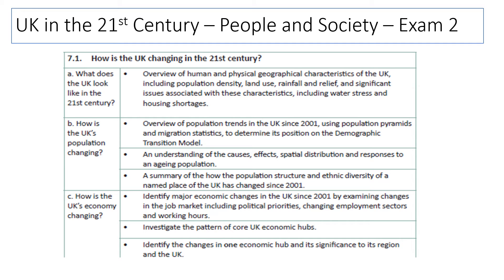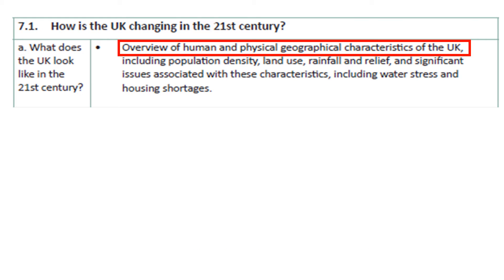The title of this unit is 'UK in the 21st Century' and the exam is 'People and Society,' which is exam 2. This unit is split into two halves. We're going to complete half 7.1 first: how is the UK changing in the 21st century? As you can see from the student guide, it's split into three sections: what does the UK look like, how is the UK population changing, and how is the UK economy changing. We're starting with 7.1 Part A, specifically bullet point one: an overview of the human and physical geographical characteristics of the UK.